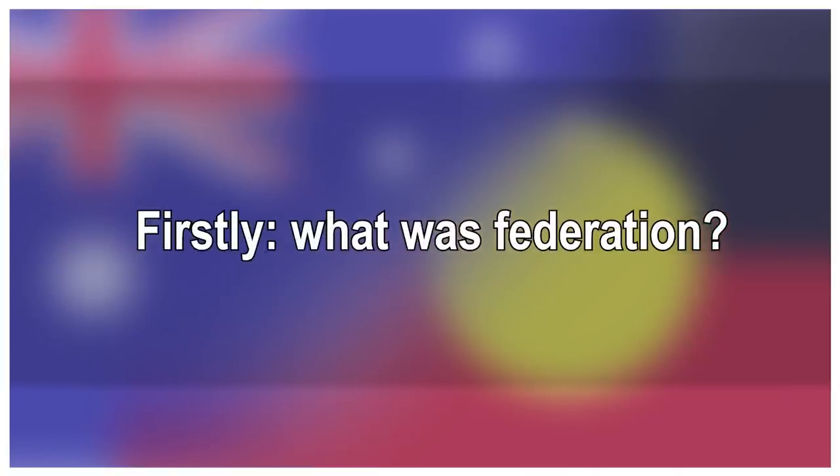Firstly, what was Federation? January 1st 1901 was the day that Australia became a country. The constitution came into effect, the Commonwealth of Australia was formed, and the federal government was created. This allowed us to collectively govern in our own right.